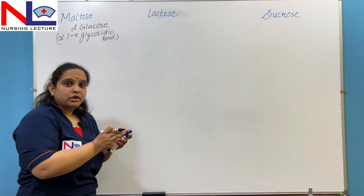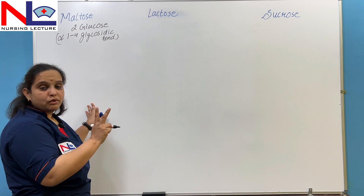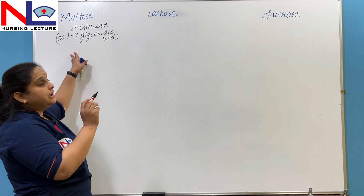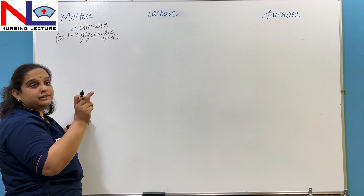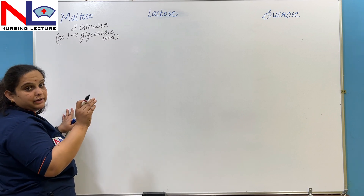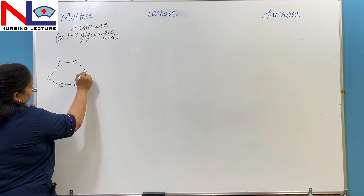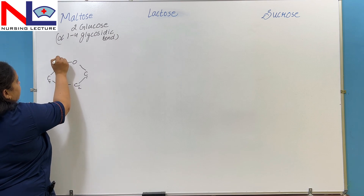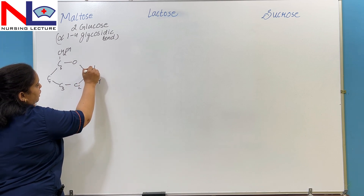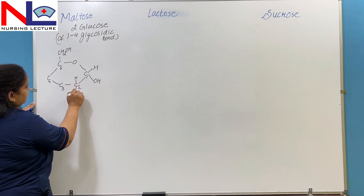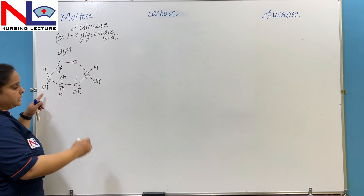There are two sugar molecules, both glucose, and the orientation of both is alpha. I will now draw the chemical structure of two glucose units with alpha orientation. The bond is created at carbon-1 and carbon-4. As discussed in the previous class, glucose is present in a six-membered ring called a pyranose ring. Here I am drawing the pyranose ring of glucose with carbons 1, 2, 3, 4, 5, and 6. At carbon-1, the orientation of the hydroxyl group is below — this is alpha glucose.